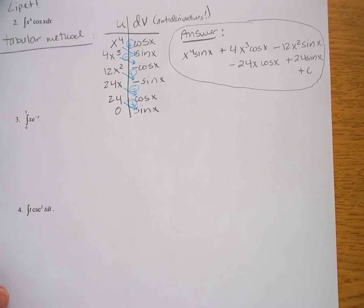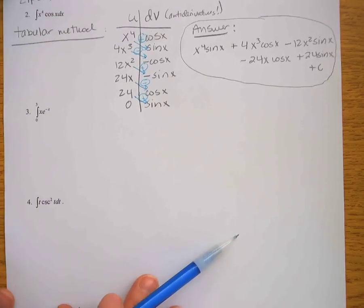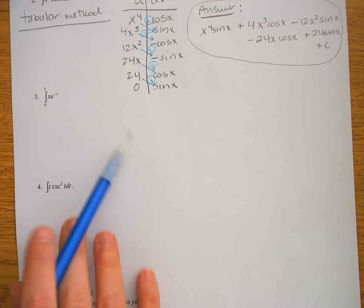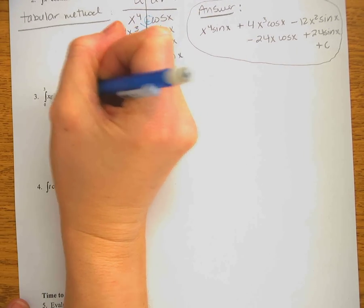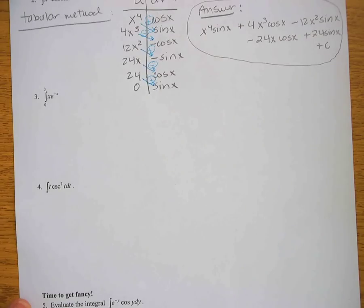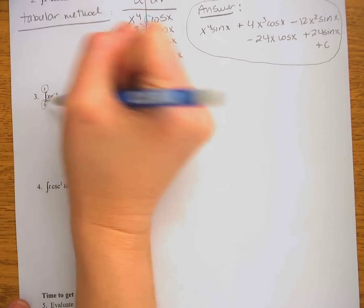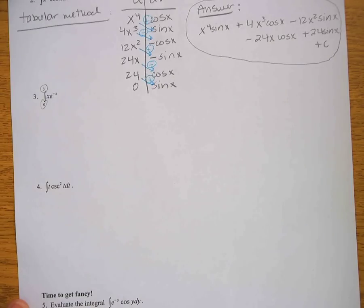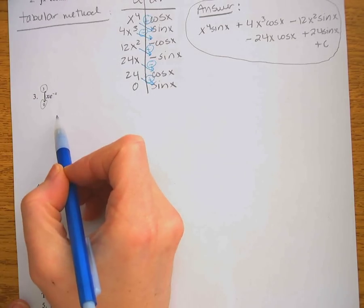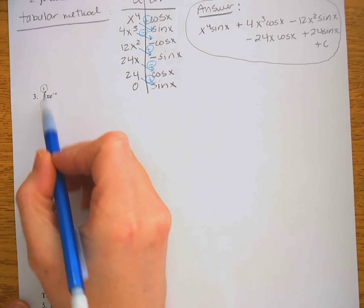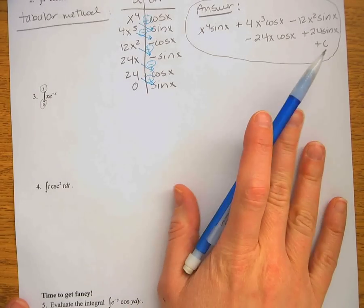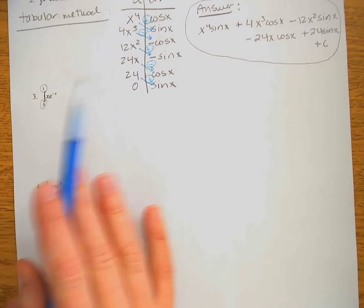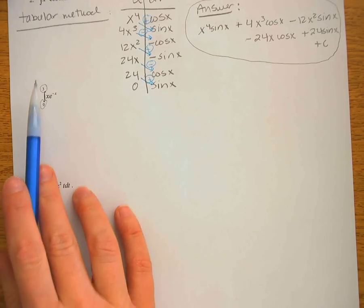For example three I'll use the same tabular method because I have a polynomial times an exponential — another ideal case. Note this is a definite integral with limits from 0 to 3, so I will not add plus C; instead I'll evaluate the antiderivative at the endpoints.